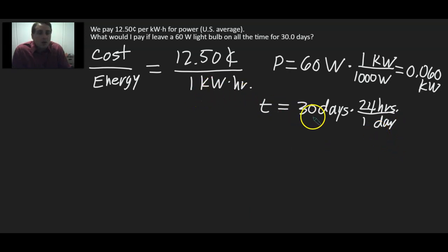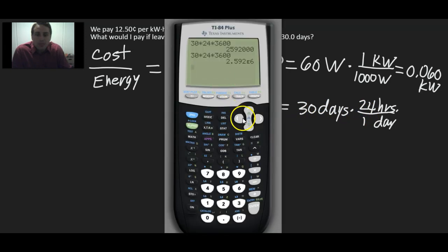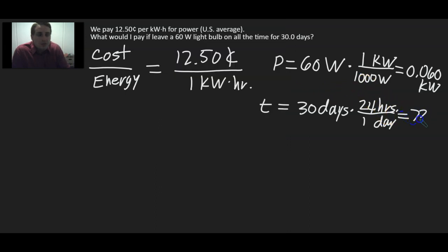So, we need to take 30, multiply by 24. Let's do that. Let's go out of scientific mode. So this is 30 times 24. Let's write that down at 720, 720 hours.